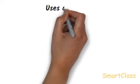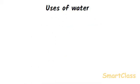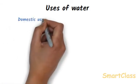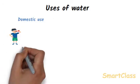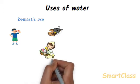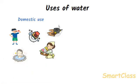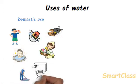Let us understand the uses of water. Domestic use of water: Water is used in homes for drinking, cooking, washing clothes and utensils, bathing, cleaning floor, flushing toilets and watering plants. These are all domestic uses of water.